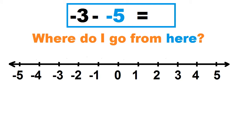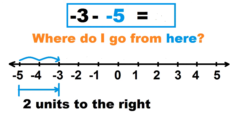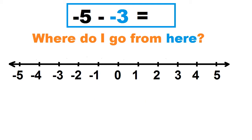Negative 3 minus negative 5. Where do I go from negative 5? Count the number of units from negative 5 to negative 3, and take note of the direction. To the right is positive, to the left is negative. Let's count: 1, 2. That's 2 units to the right. So negative 3 minus negative 5 equals 2.